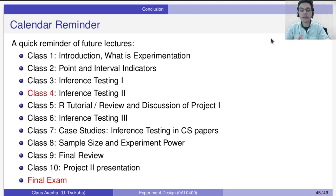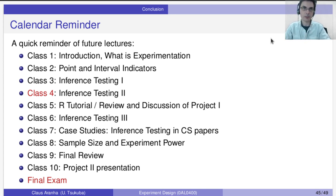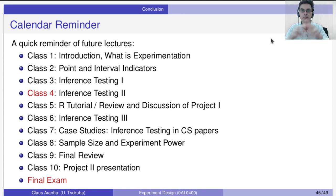Quick reminder of the rest of the course. This was class 4 — inference testing. Next week will be golden week, so we're not going to have class. The class after that, we're going to have a short R tutorial and a review and discussion of project 1. Project 1 deadline is next week. I will spend some time to review it and try to do some comments. Class 6 will be inference testing — multiple hypothesis testing, I believe. And after that, we're going to do case studies to improve your knowledge of inference testing, especially in the context of CS papers.